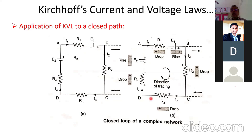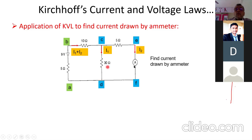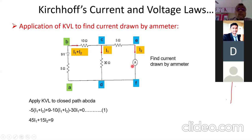Application of KVL to find the current drawn by an ammeter: given a closed path circuit with a 9V battery and resistances of 5 ohm, 10 ohm, 5 ohm, and 30 ohm, we want to find the ammeter current. We assume I1 flows in one branch and I2 in another, so the combined branch carries I1 plus I2. Applying KVL to loop ABCDA gives: minus 5(I1+I2), plus 9, minus 10(I1+I2), minus 30·I1, equal to zero.